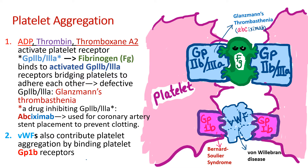Now, platelet aggregation. ADP from the dense granule, thrombin from the alpha granule, and thromboxane A2 from the platelet organelle activate platelet receptor glycoprotein 2B3A — we call it GP2B3A. Fibrinogen in the blood then binds to activated GP2B3A receptors, bridging platelets to adhere to each other. When GP2B3A receptors are defective or deficient, it causes Glanzmann's thrombasthenia, and patients develop bleeding problems due to platelet aggregation failure.